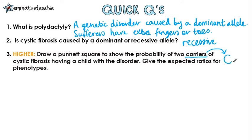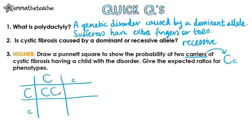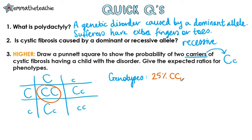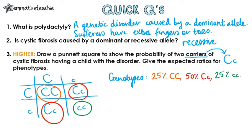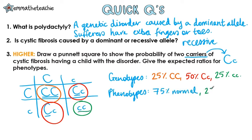Carriers means that they have got one recessive allele and one normal non-cystic fibrosis allele. When we do our cross for this, if we work out our genotypes, we can see that we've got 25% big C big C, 50% big C little c, and 25% two little c's. For the phenotypes, anything that has got a big C will be normal, which is 75%. The last 25% is two recessive alleles, which gives you cystic fibrosis. As a ratio, this is 3 to 1.